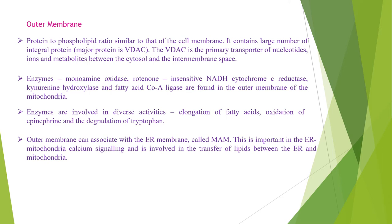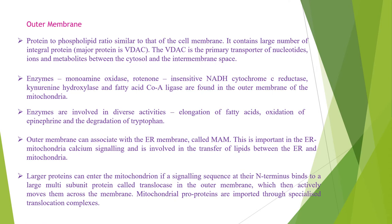Disruption of the outer membrane permits proteins in the intermembrane space to leak into the cytosol, leading to cell death. The outer membrane can be associated with the ER membrane, called MAM or mitochondria-associated ER membrane. This is important in ER-mitochondria calcium signaling and is involved in the transfer of lipids between the ER and mitochondria. Larger proteins can enter the mitochondria if a signaling sequence at their N-terminus binds to a large multi-subunit protein called the translocase of the outer membrane, which then actively moves them across the membrane. Mitochondrial pro-proteins are imported through specialized translocation complexes.